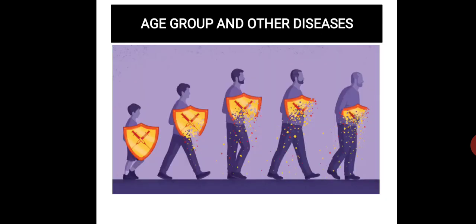Regarding age groups: in younger people, immune system activity is stronger and can fight viruses. In older age, immune activity declines, and the risk of severe disease and death is much higher. If vaccination is made available to all these populations, we can protect healthy people from coronavirus.